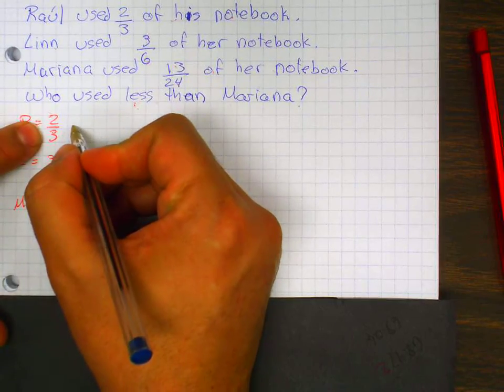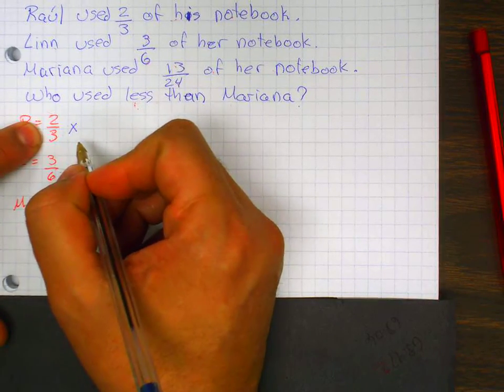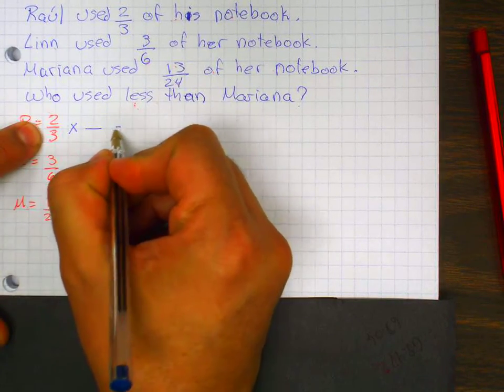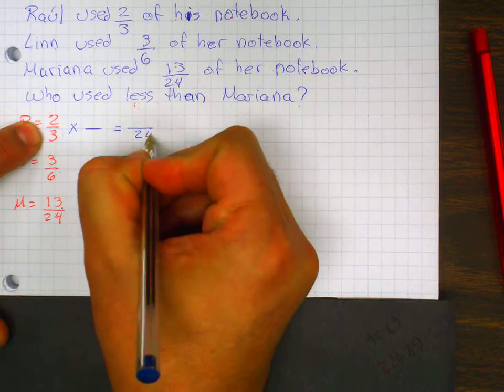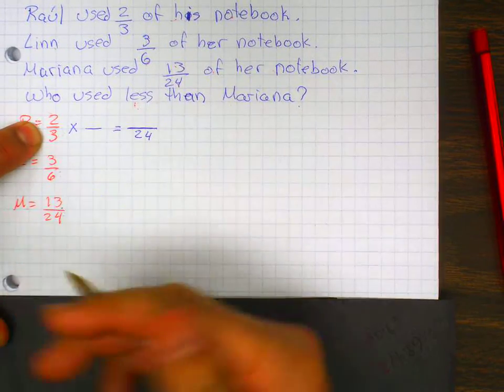So I need to multiply the denominator so I can have a new denominator of twenty-four. So what I'm doing here, I'm creating an equivalent fraction.